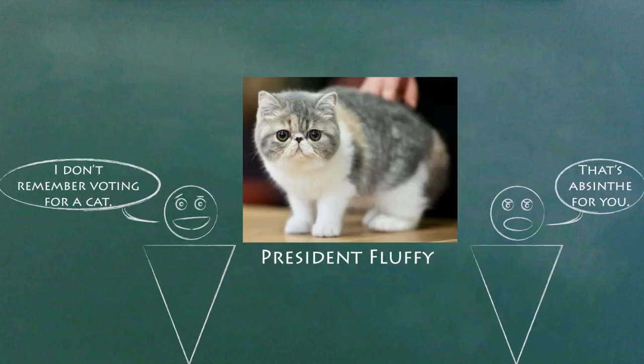Third, the president of each regional Federal Reserve Bank is now elected in a different way than before. It used to be that all the members of the board voted for the president, but now the board members from banks can't vote.